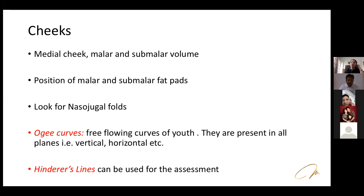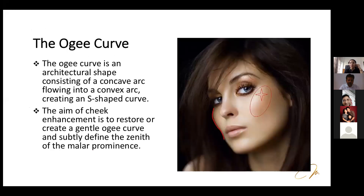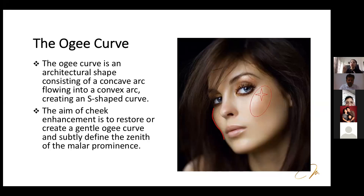In the cheeks, the medial cheek, malar, and sub-malar volume should be present. The OG curve — a small S-shaped curve consisting of a concave arc flowing into a convex arc — is the free-flowing curve of youth. The aim of cheek enhancement is to restore this OG curve and define the zenith of the malar prominence, which should be lateral to the outer canthus of the eye and above the zygomatic bone.